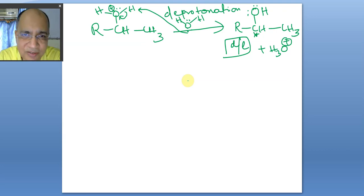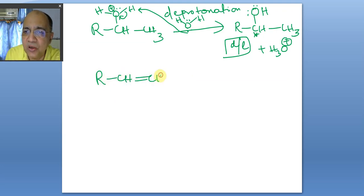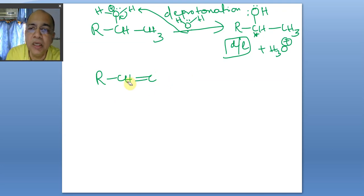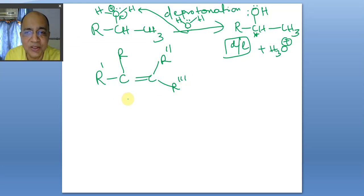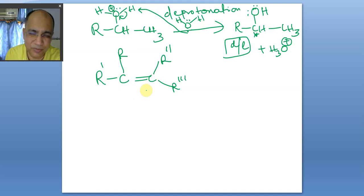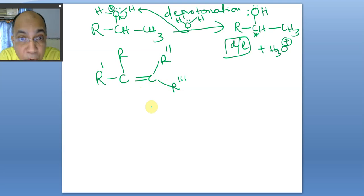When the double bond is more substituted — for example, where there are no hydrogens on the double-bond carbons — you have to look at the possible carbocations formed. In that case there is a chance of rearrangement, which we have not yet discussed, and things become more complicated.